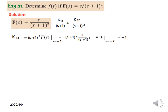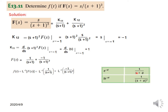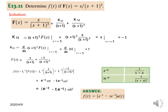Plugging in s=−1 gives k12=−1. For k11 we differentiate d/ds of the same expression and apply the same condition. After cancellation we are left with d/ds of s, which equals 1, so k11=1. Plugging in both values gives the final F(s). Taking the inverse Laplace using the table: k11 gives e^(−t)u(t) and k12 gives t·e^(−t)u(t). Taking u(t) common, this is the final answer, which matches the book.